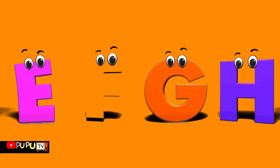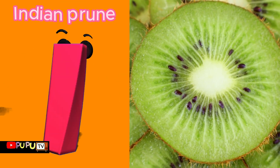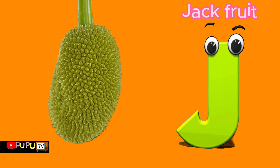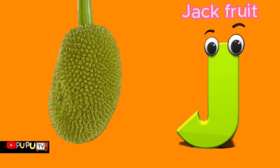I is for Indian prune, e-e-e, Indian prune. J is for jackfruit, j-j-jackfruit.